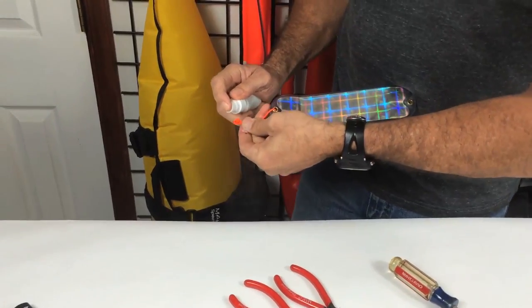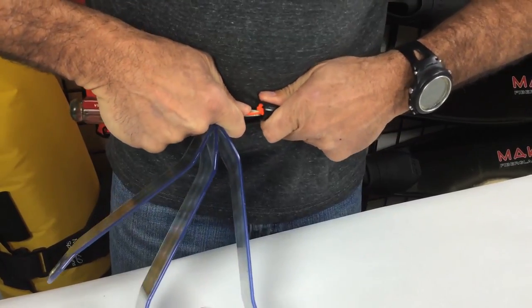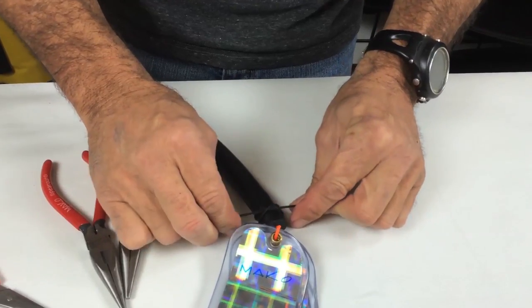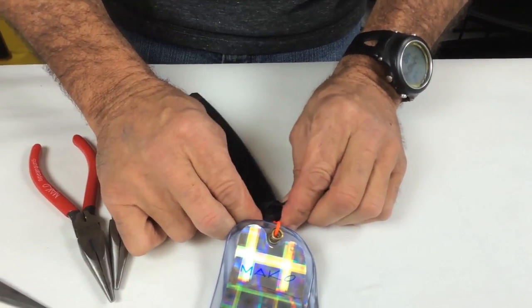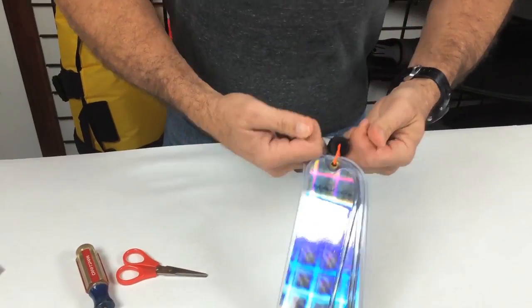Now spray some lubricant on the knot and using a small screwdriver push the knot into the tubing. Use your band tying line to form a single constrictor knot and pull the ends tight with your pliers.